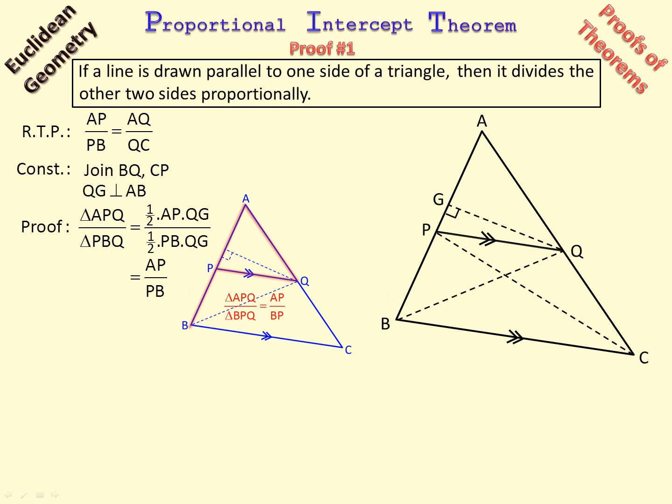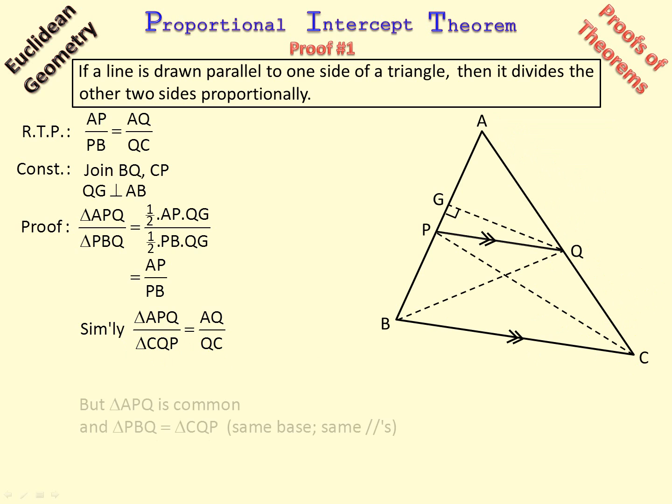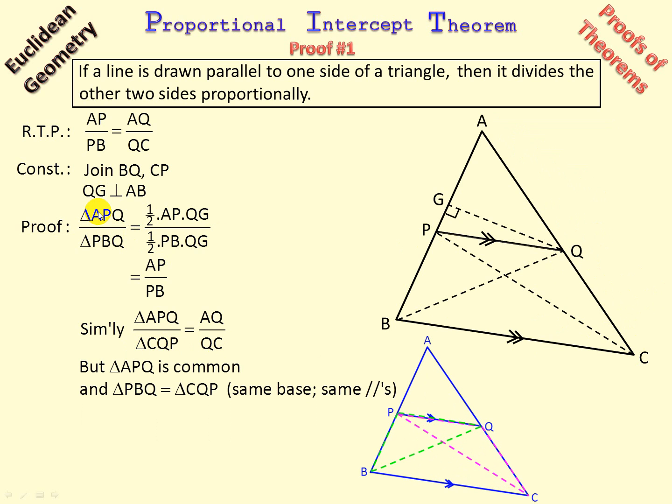Now in geometry we have a very nice way of going about things where if we now have exactly the same proof in a different situation in the diagram, we can write SIMILARLY. And then, being lazy mathematicians, we abbreviate that to the word SIMLY. So I am going to say SIMLY, that triangle over that triangle equals that side over that side. There it is, same reasoning exactly. But now we are arguing, so we say but if you have a look at this, that and that, APQ is common, and PBQ equals CQP.